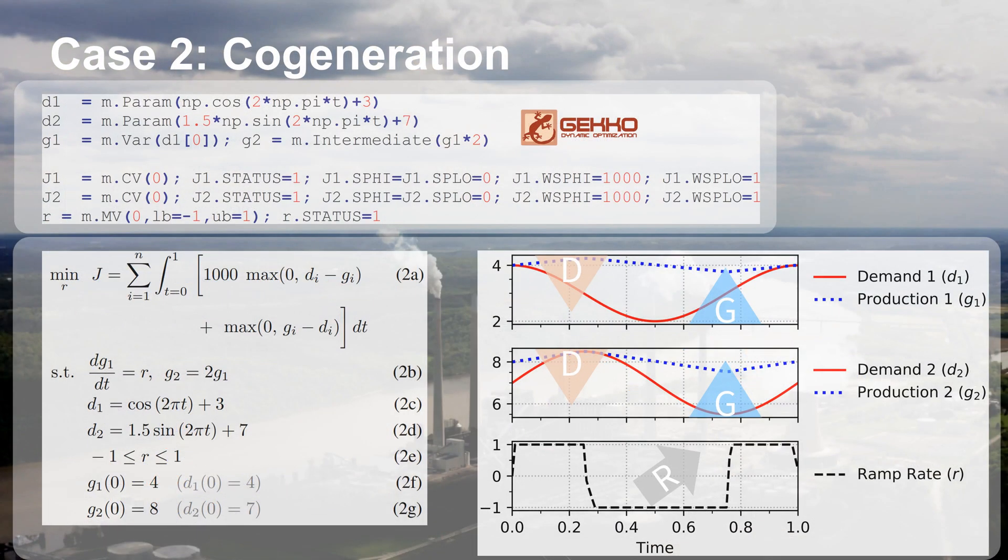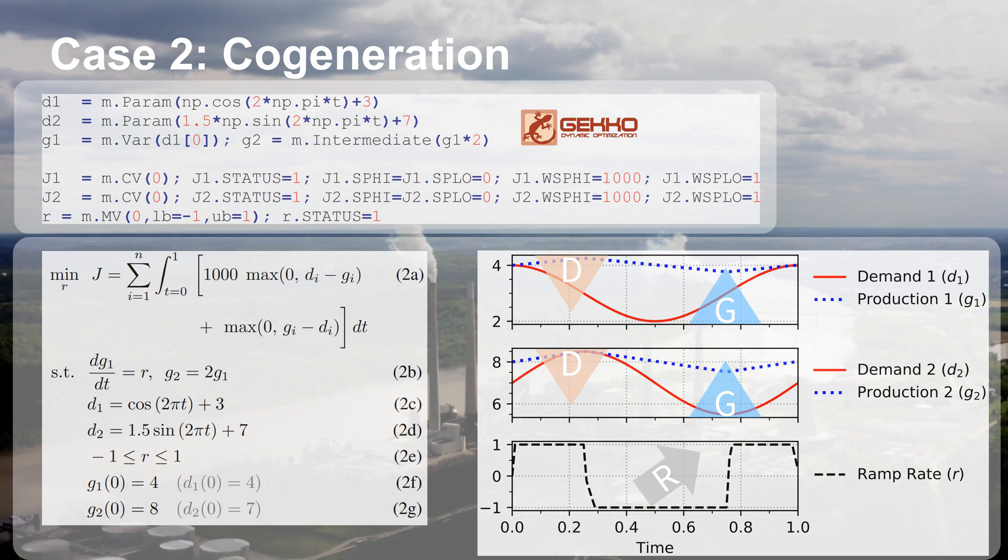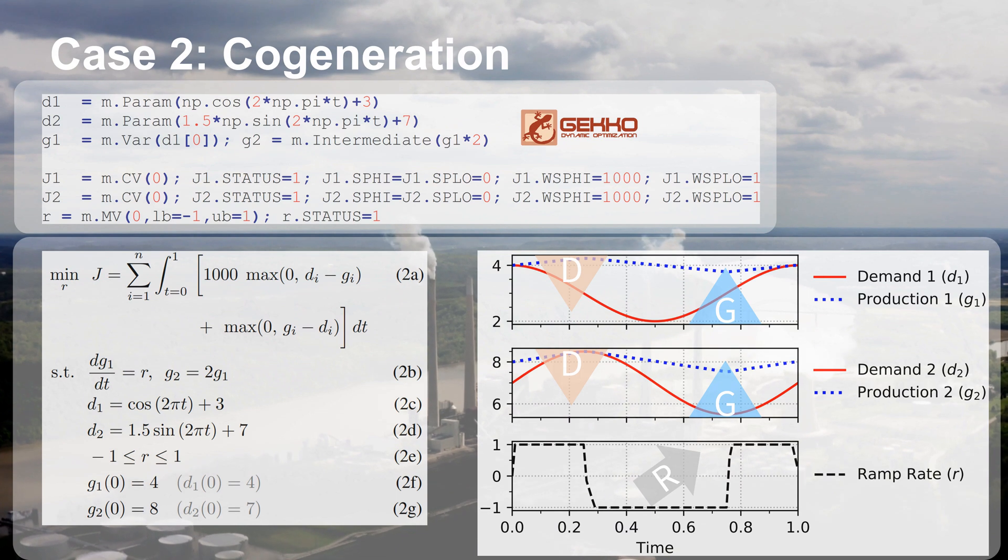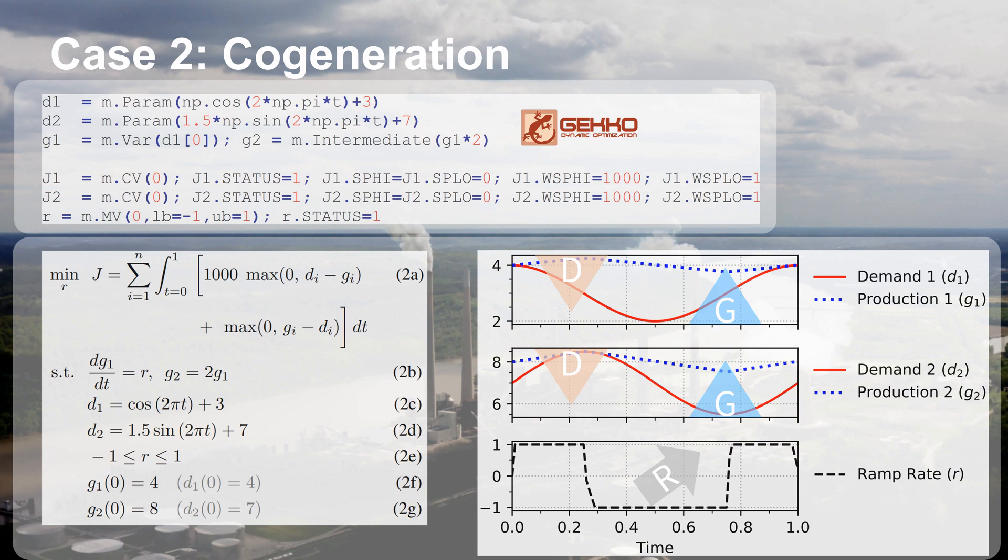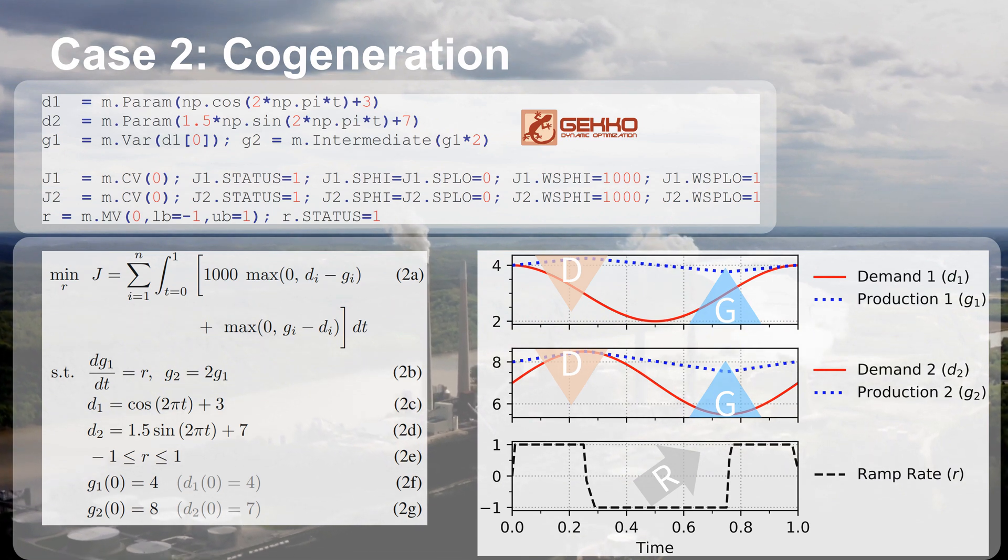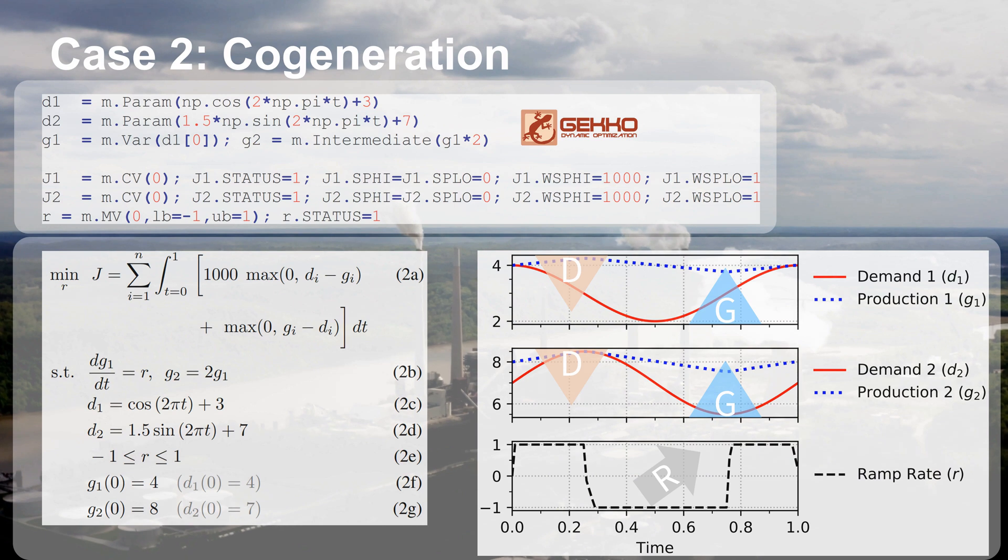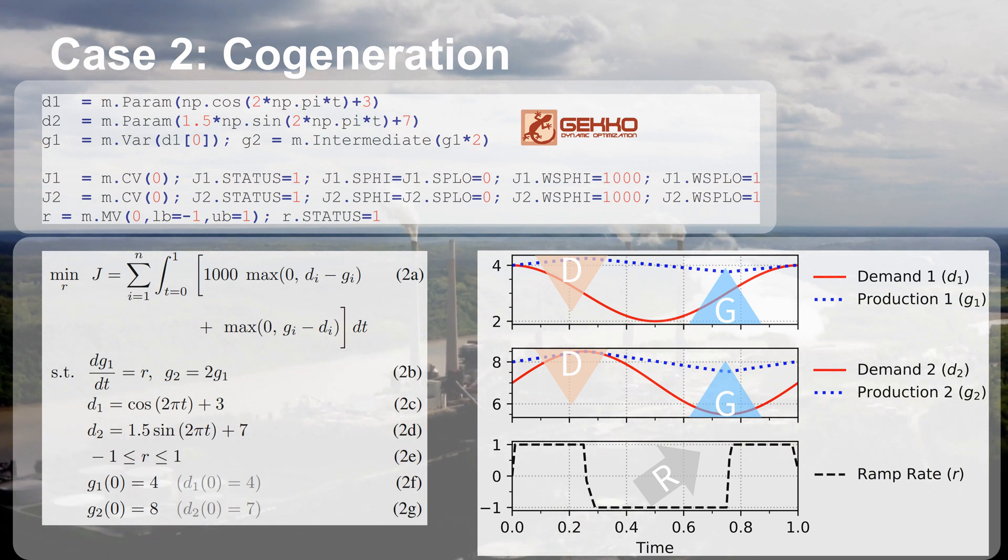Let's go on to the next one. This is going to be problem number two, which is cogeneration. And this is common in places like refineries or chemical plants where you might produce electricity and steam. Anywhere where you have some waste heat that you might be able to use, it's going to be particularly attractive. It may be power generation next to a district heating system, which is often done in Scandinavia or other places that are very cold where it makes sense to run a district heating system.